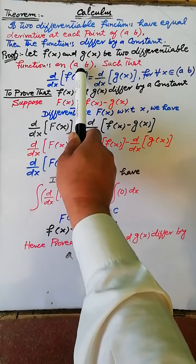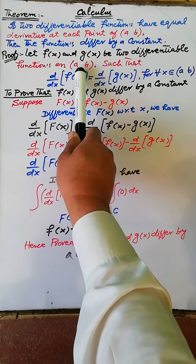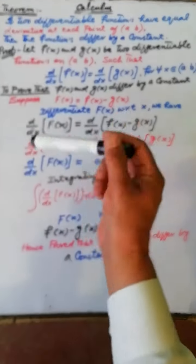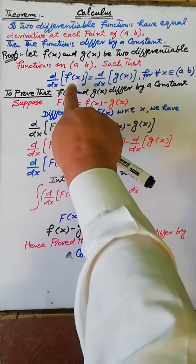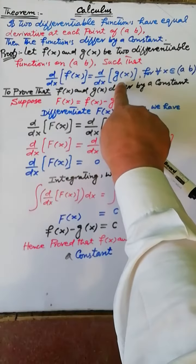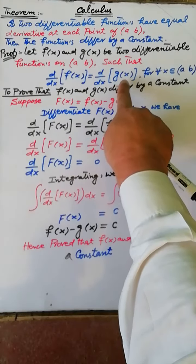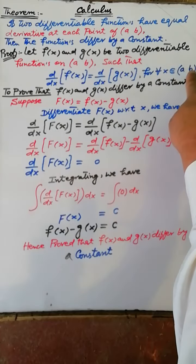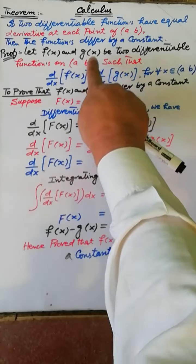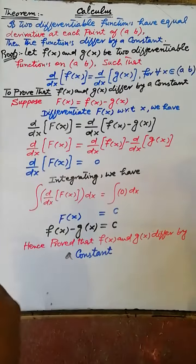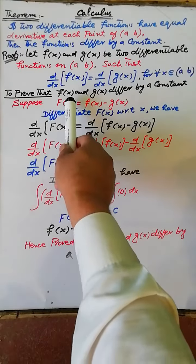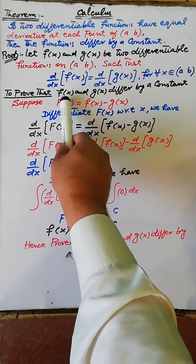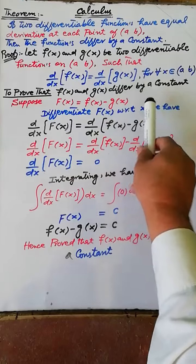are two differentiable functions on the open interval with inputs a and b, such that the derivative of f(x) and the derivative of g(x) are the same on each point of the given interval. This is the hypothesis. To prove that the difference between f(x) and g(x) is a constant.